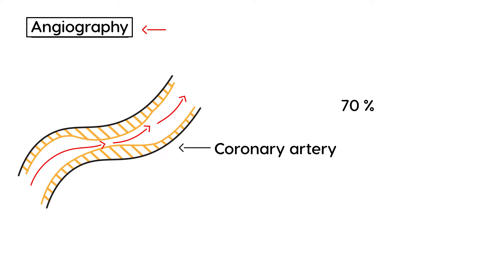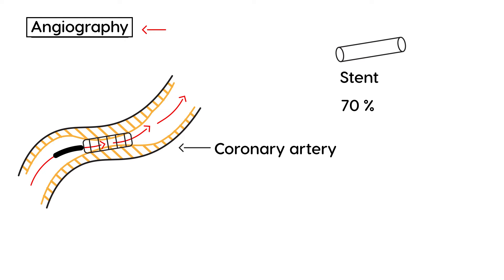You can treat the blockage by placing a stent — a small device that you place inside the artery and then open, allowing the lumen to become larger than its current blockage. So angiography is used to diagnose coronary artery disease, determine how much blockage is present, and a stent can be placed at the same time. It's a great test to both diagnose and treat coronary artery atherosclerosis.